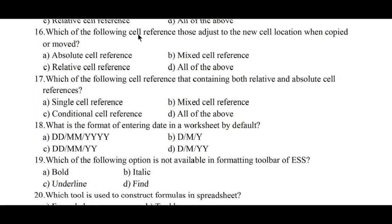Question number 16: Which of the following cell references contain both relative and absolute cell references? Option A: single cell reference, B: mixed cell reference, C: relative cell reference, D: all of the above. Question number 17: Which of the following cell reference contains both relative and absolute cell references? Option A: single cell reference, B: mixed cell reference, C: conditional cell reference, D: all of the above. Option B, mixed cell reference, is the correct answer.